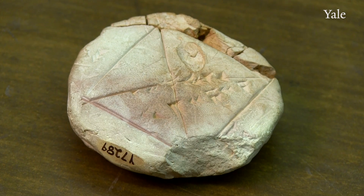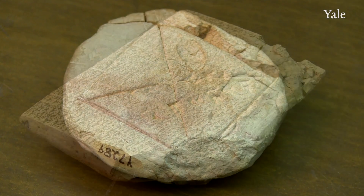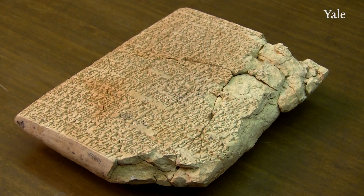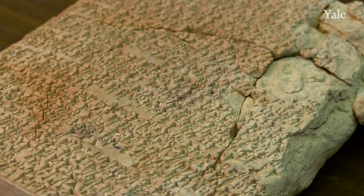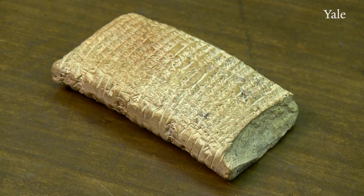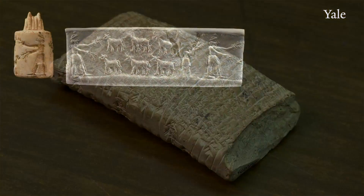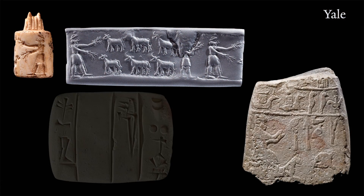Cuneiform tablets are made of clay. They were usually not fired in antiquity — they were just everyday documents that were written down, and no measures were taken to conserve and preserve them for the future.